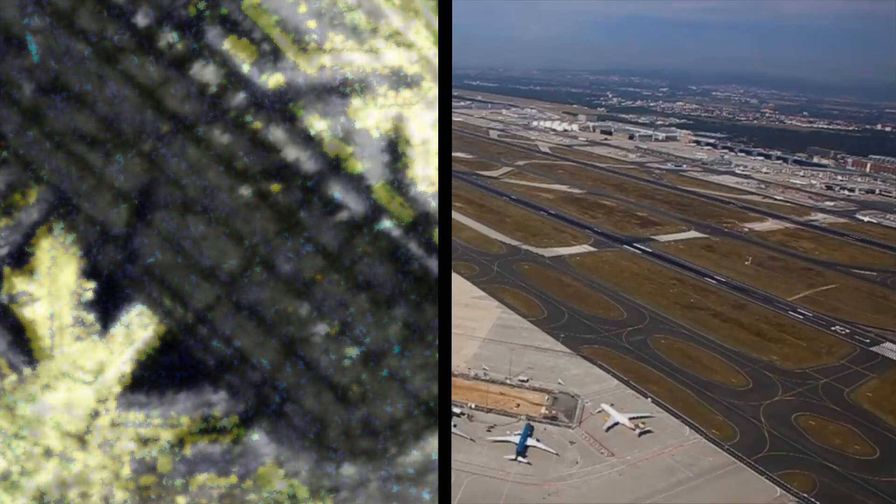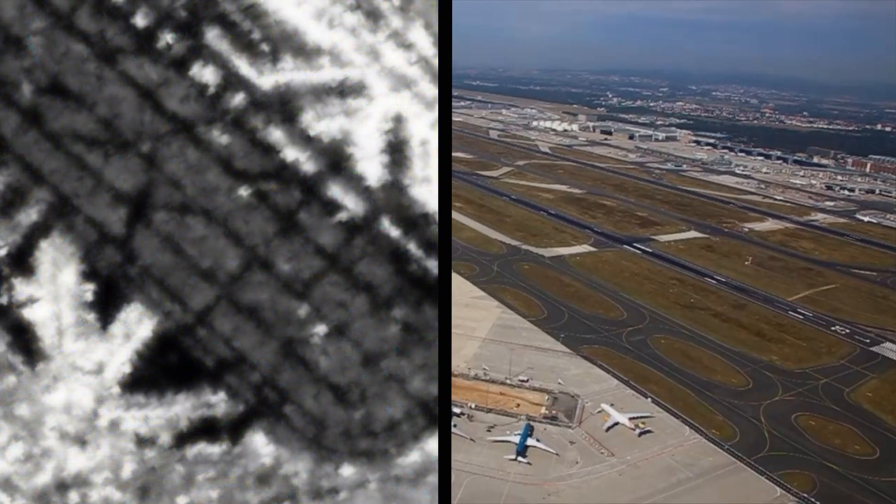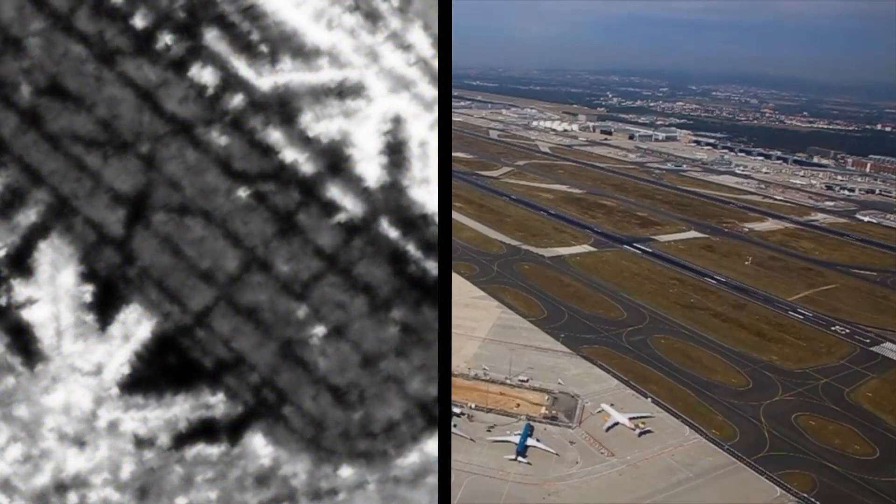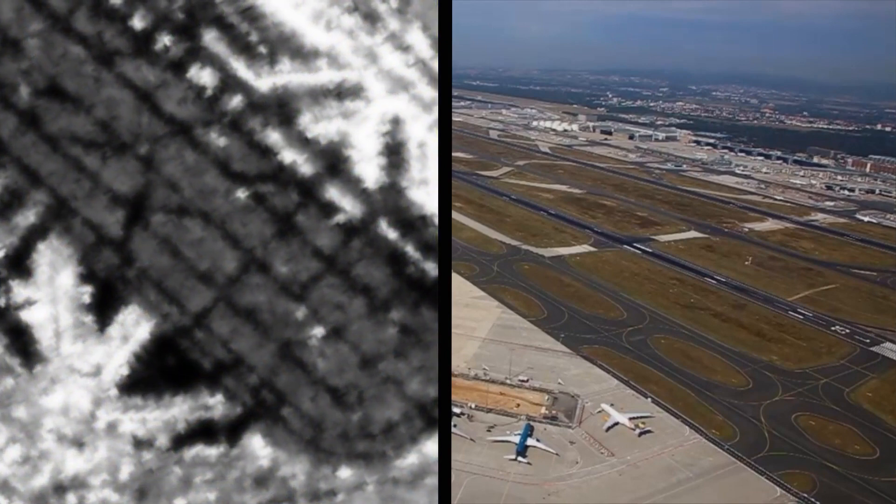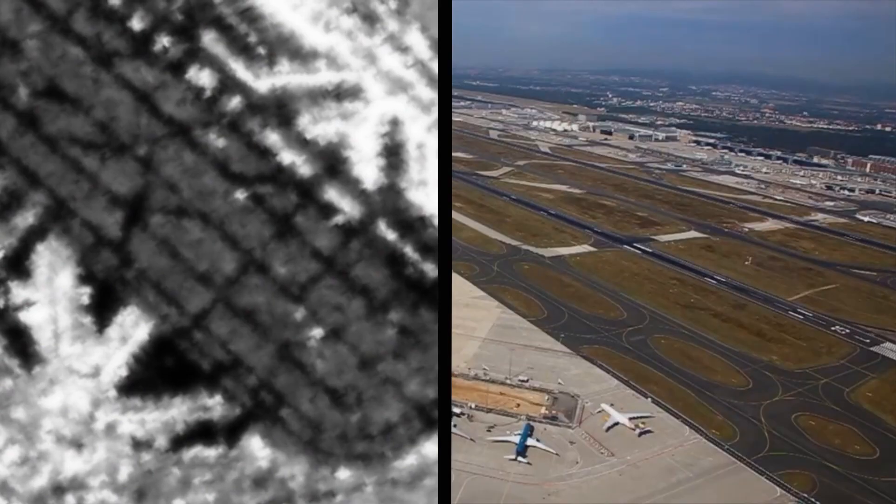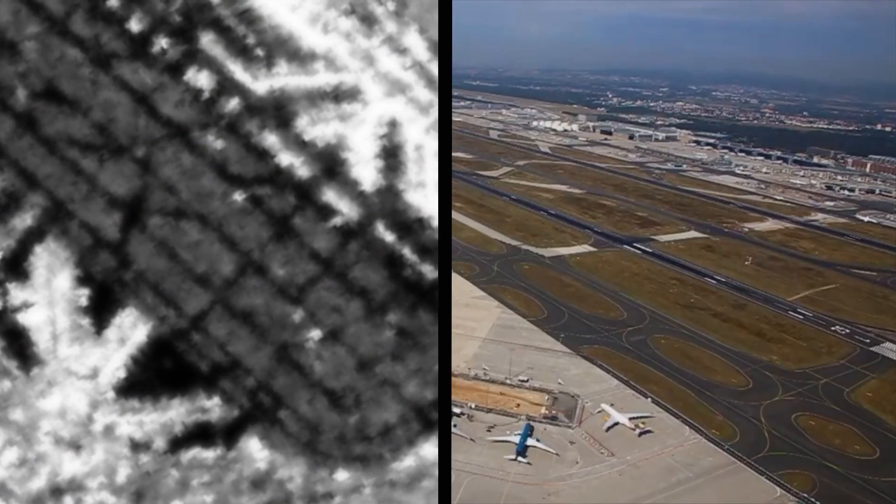Dark areas in the image are not necessarily dark in reality. Instead, they scatter the signal almost entirely in another direction, and the sensor receives hardly any signal back from this point on Earth.